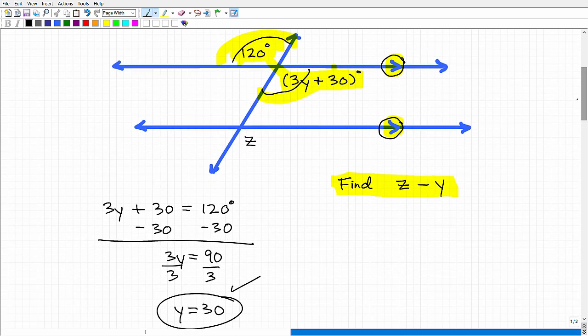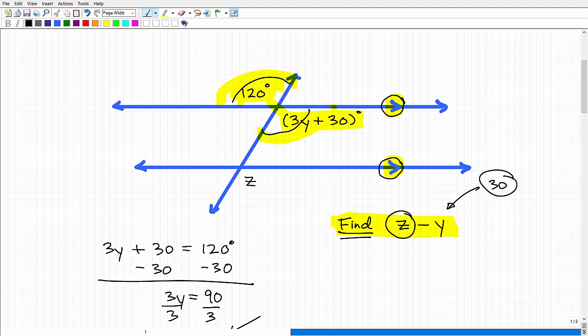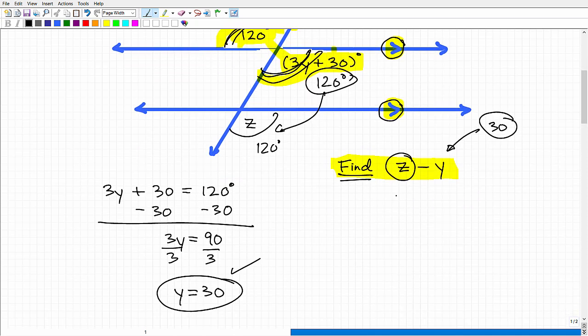But before I go any further, okay, I'm trying to find out what z minus y is equal to. So now I have the value for y. Okay. That's going to be 30. But I need to find out what z is equal to. Right. So how do I know what z is equal to? Well, hopefully, now that you understand that this angle is the same as this angle, this angle right here is 120 degrees. Okay. And this angle is the same as z. Okay. So hopefully, you remember this stuff from your geometry. So z, the value of z is also 120 degrees. Okay. So z is 120. Okay. We know what y is equal to now. It's 30, 30 degrees. So when I subtract y from z, I'm going to get 90 degrees. Okay. So that is the expression of z minus y.